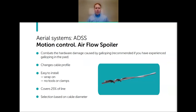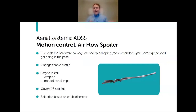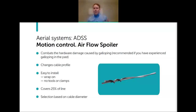The airflow spoiler combats galloping—very high cable movement. This is typically caused by ice forming a teardrop or wing profile on the cable. Strong wind creates lift, pulling the cable up until it bottoms out. The airflow spoiler changes the cable's profile so it cannot produce lift. Unlike the dielectric damper, which we recommend universally, the airflow spoiler is not a necessity for everyone—it's highly likely you already know whether you'll have this issue in your area.